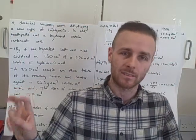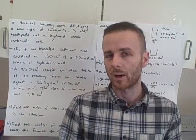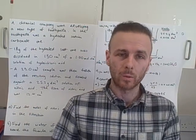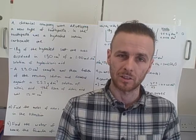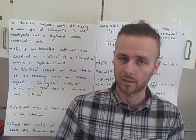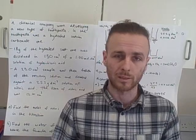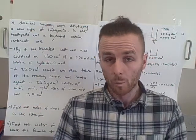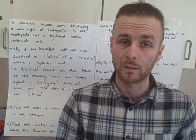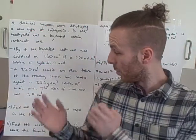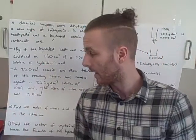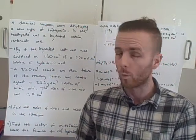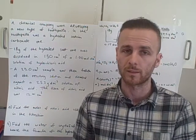Today we're finding X. There are two types: the first is where X is an element, and the second is where X is the water of crystallization. We're doing the harder of the two — where X is the water of crystallization. Both types follow the same basic principle: Did My Elephant Suck My Ante. Here's the question — pause the video, have a go, then unpause to go through the answer.